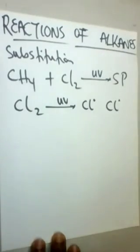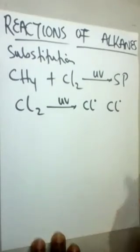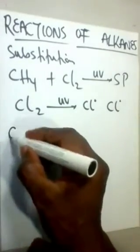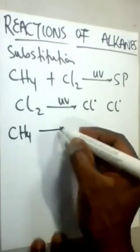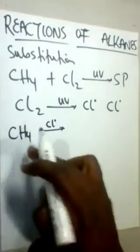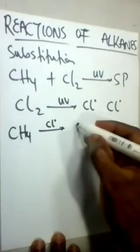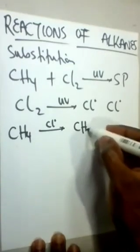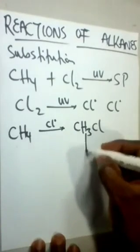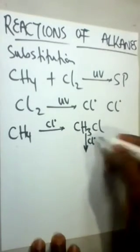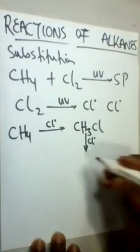These radicals are very reactive and can displace hydrogen atoms from methane to form several products. Firstly, chloromethane is formed. This reaction is a continuous reaction in the presence of UV light.